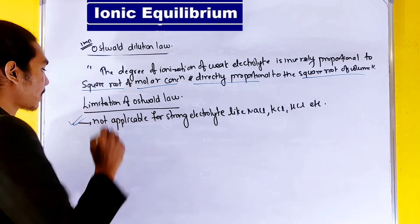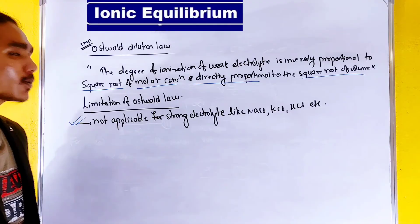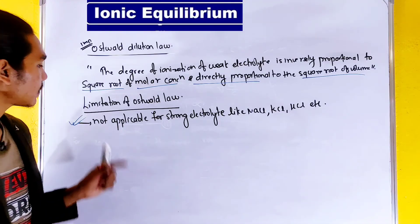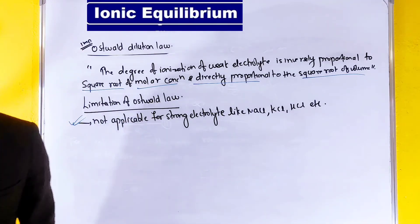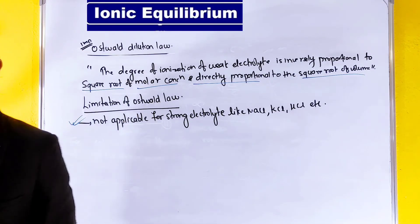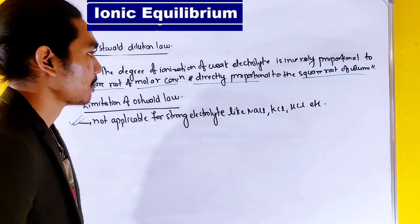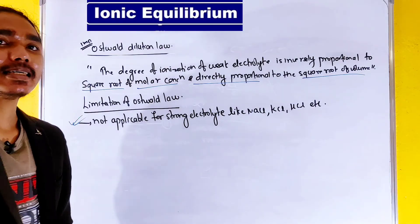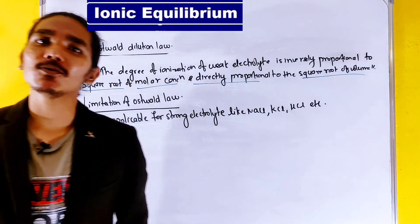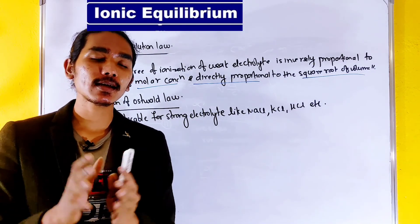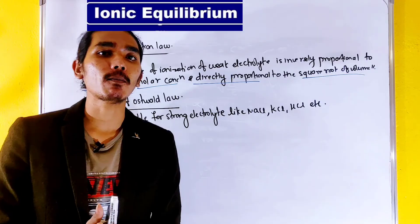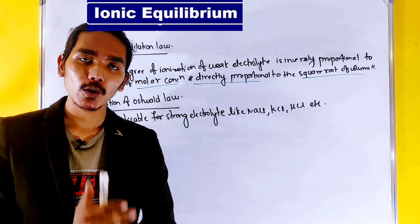Limitation: this law is not applicable for the strong electrolyte — for example, NaCl. Strong electrolytes are completely ionized, so Ostwald's Dilution Law does not apply to them.